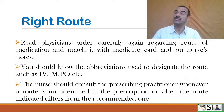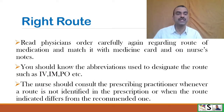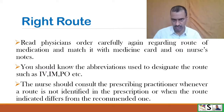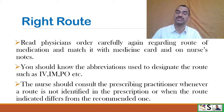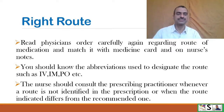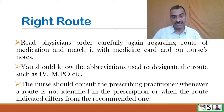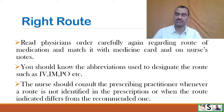Then right route. Read the physician's order carefully regarding the route of the medicine and match it with the medication card and nurse's notes. You should know the abbreviations used to designate the route, such as IV, IM, PO, etc. The nurse should consult the prescribing practitioner whenever a route is not identified in the prescription or when the indicated route differs from the recommended one. You should clarify first.